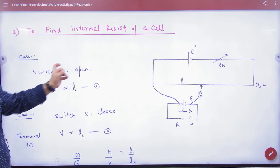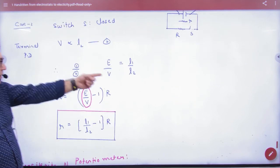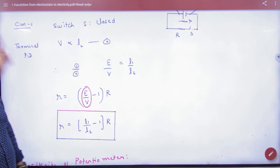So L1 is balancing length for EMF. L2 is balancing length for terminal potential difference V. So divide them. Internal resistance we have done in class.